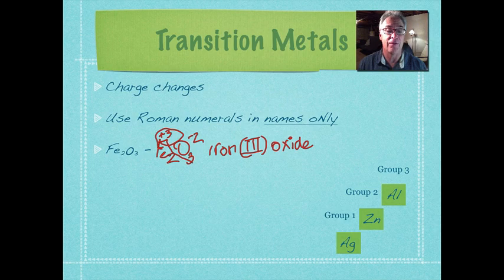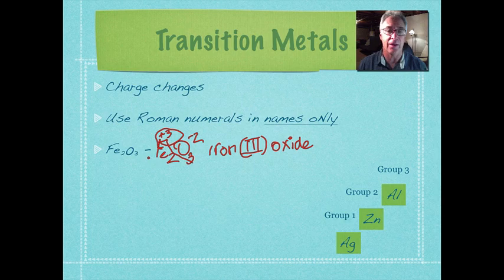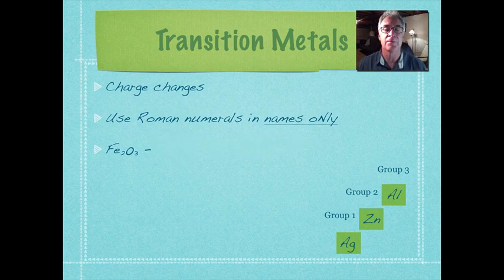So you have these two elements of iron, and they're at plus three. Three times two is six, so it's plus six. So we can average that out, and of course, then it's happy because all the charges match. So that's how you would do that particular naming of that particular transition metal reaction.